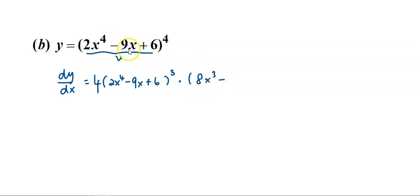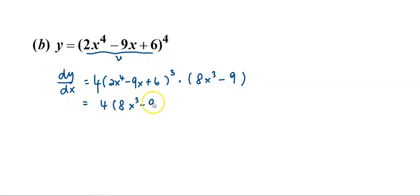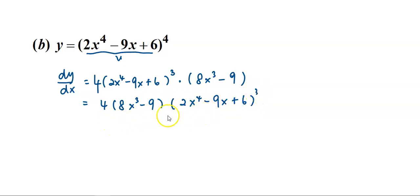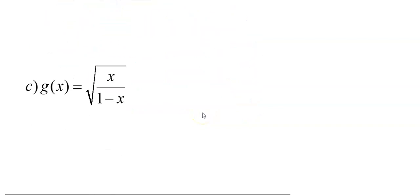Differentiating negative 9x gives negative 9, and differentiating the constant gives zero. Now we rearrange it to look neat, and we check if there's any chance to simplify further. This is the final answer. Now let's move to the next example, which is a more complicated function.